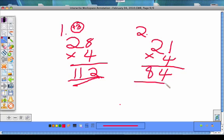And that's how you multiply by a two-digit number without regrouping.